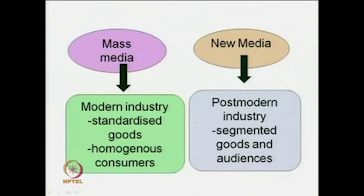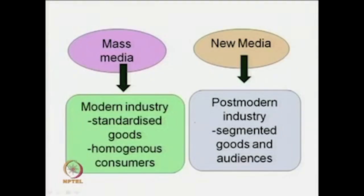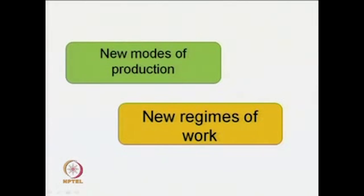Mass media and new media may also be described from the point of view of their industry. Mass media is to do with modern industry with standardized goods and homogenous consumers. New media is to do with post-modern industry where we have segmented goods and segmented audiences. This also gives rise to new modes of production and new regimes of work.